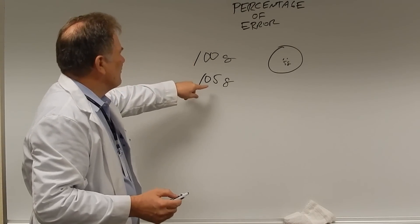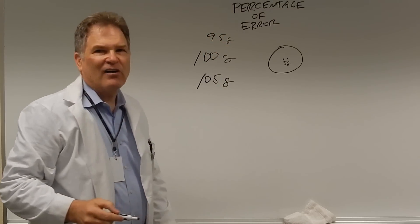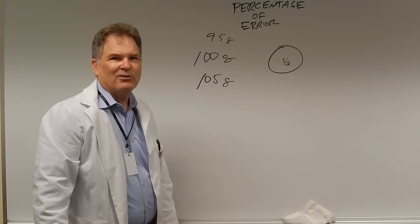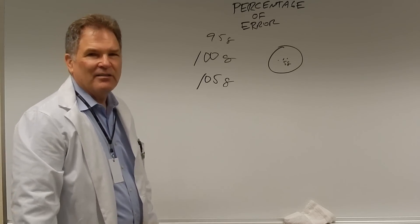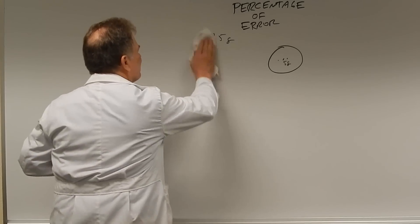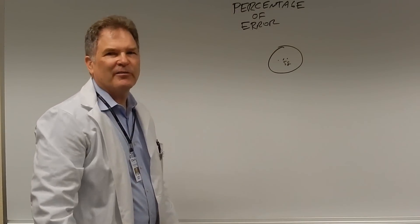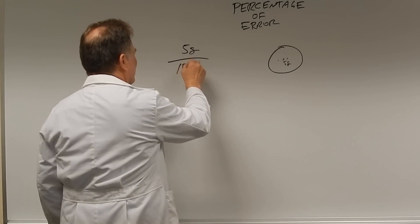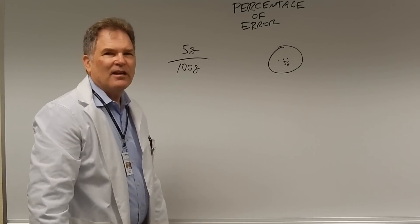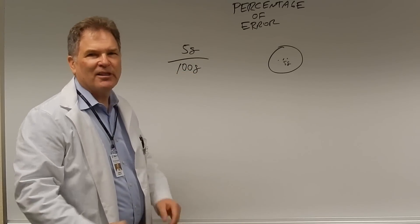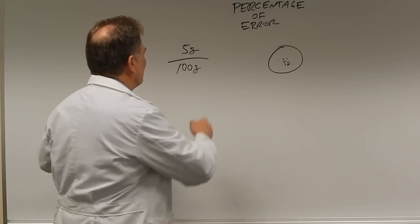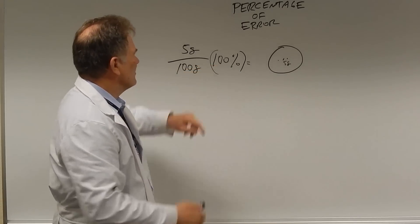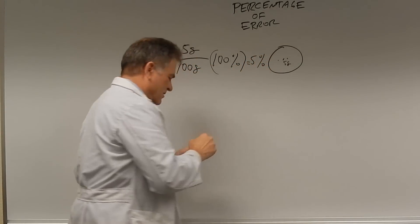Whether we ended up with 105 grams or 95 grams, we're still off by 5 grams. So we determined we're off by a total of 5 grams. To find the percent of error, we take the error in grams — which is 5 grams — divide it by the desired weight of 100 grams, and then multiply by 100 percent to convert to a percentage. So 5 divided by 100 times 100 gives us 5 percent.